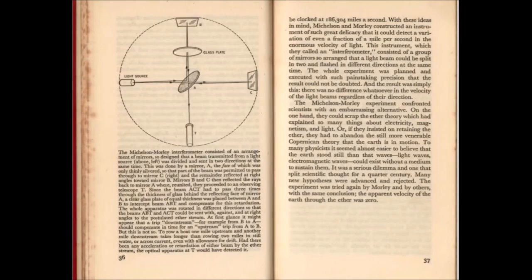It was a serious dilemma and one that split scientific thought for a quarter of a century. Many new hypotheses were advanced and rejected. The experiment was tried again by Morley and by others with the same conclusion. The apparent velocity of the earth through the ether was zero. Lincoln Barnett, forward by Albert Einstein.